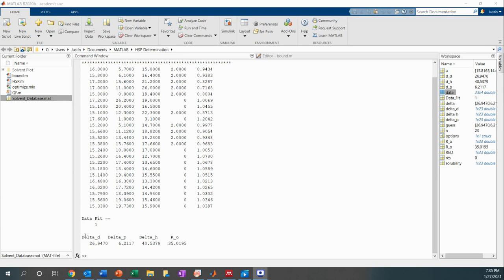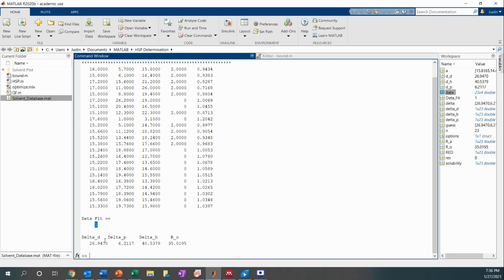We can see that the data fit is equal to one. We got a delta D value of 26.9, delta P of 6.2, delta H of 40.53, and a radius of 35. So obviously, something's a little off here. Normally, the radii are anywhere from six to 13.